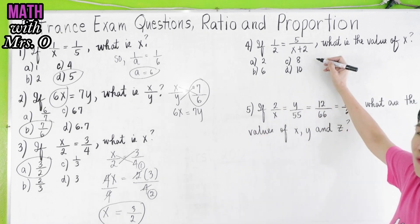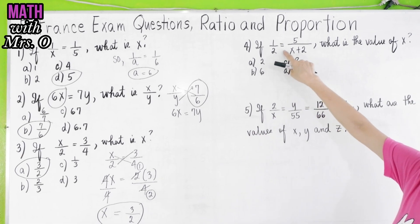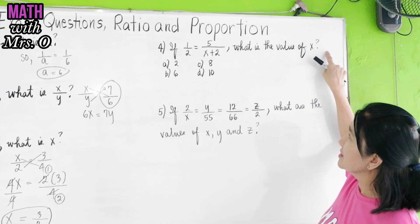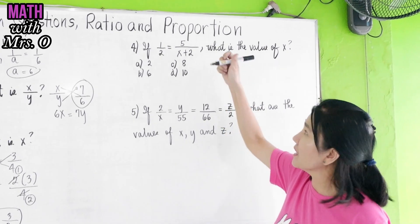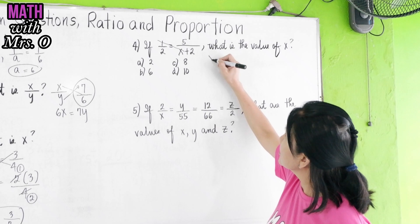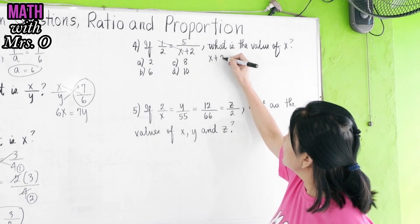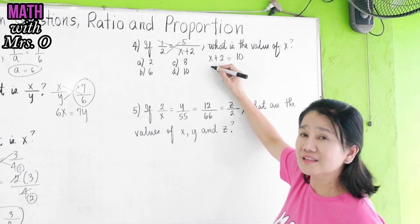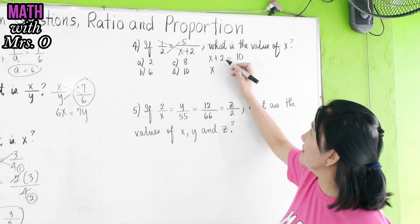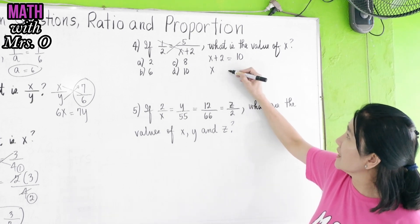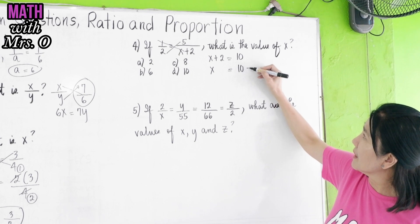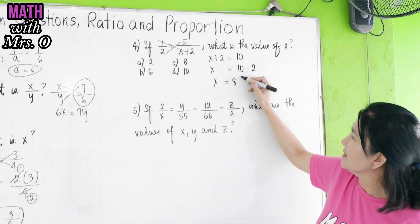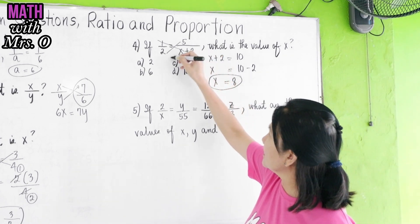Now, problem number 4. If 1 half equals 5 over x plus 2, what is the value of x? So, in this problem, you do cross multiplication again. Multiply this. So, x plus 2 is equal to, multiply this, 10. Then, isolate x on one side. Transpose 2 to the other side. So, x is equal to 10 minus 2. x is equal to 8. So, the correct answer is letter c.